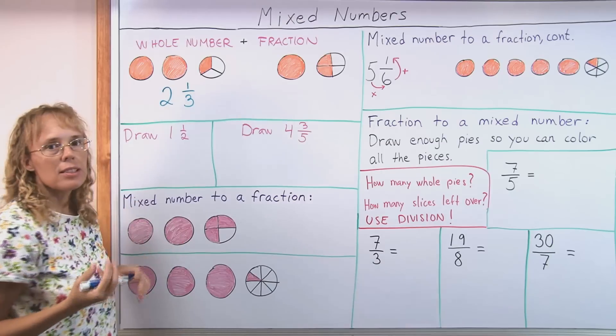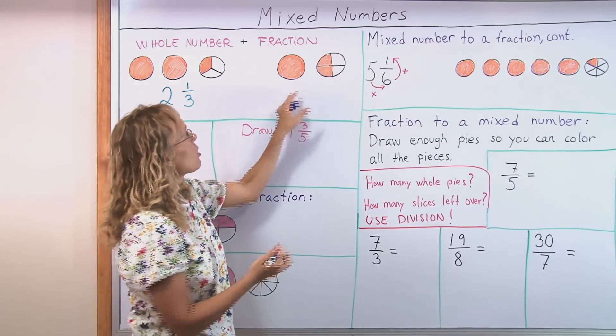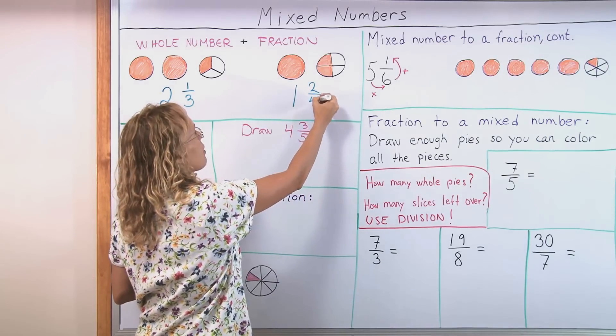This is a mixed number because it has a whole number here and a fraction here. This one is picturing one whole pie and then two fourths, right?